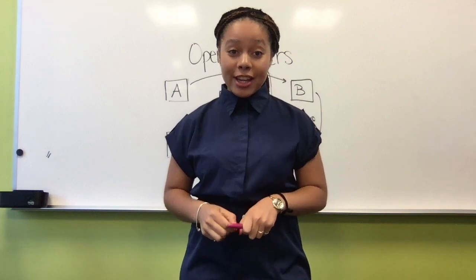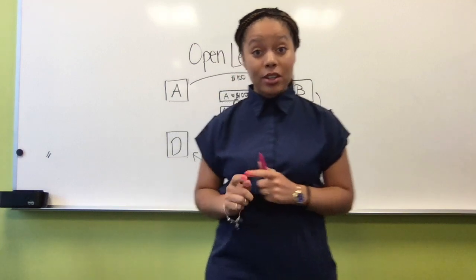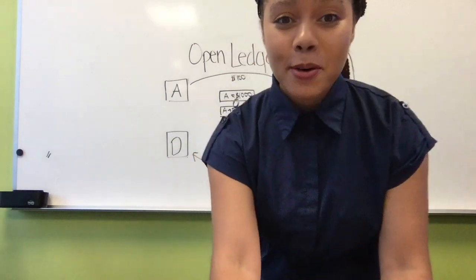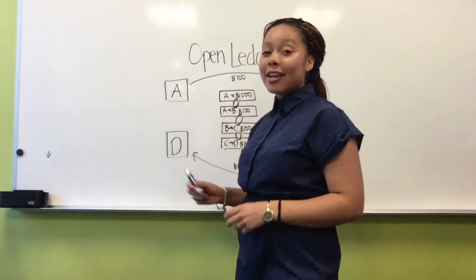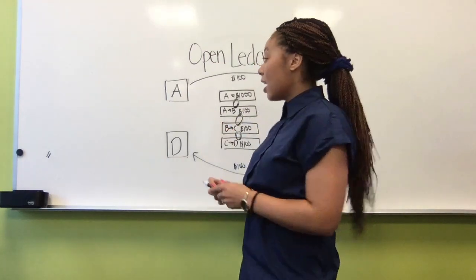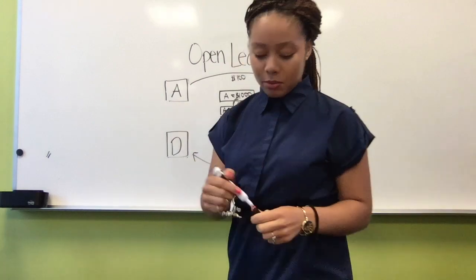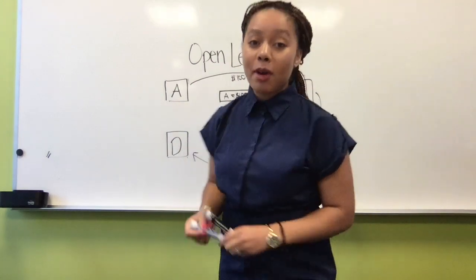So this open ledger is just a chain of transactions, hence blockchain system. In this process, every transaction is public, very transparent, and everyone can see what's going on. And then everyone can also decide whether or not a transaction is valid or not.